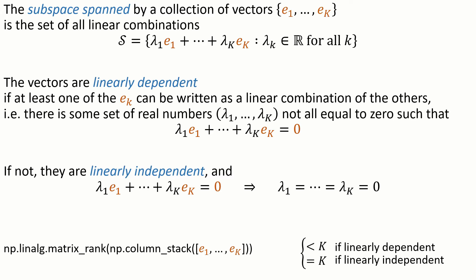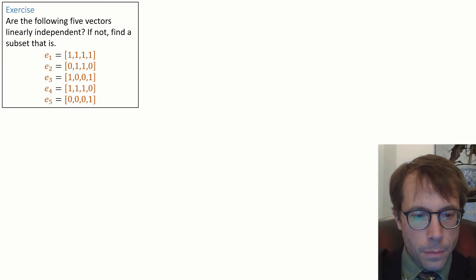Let's work through an example. Are the following five vectors linearly independent? If not, find a subset that is.